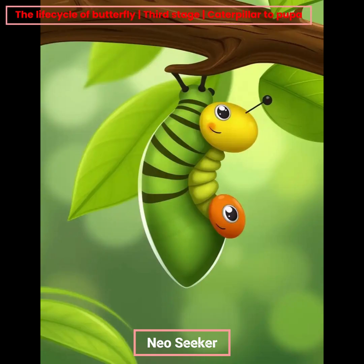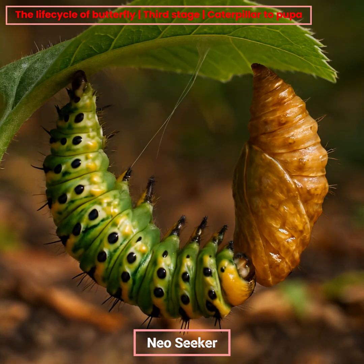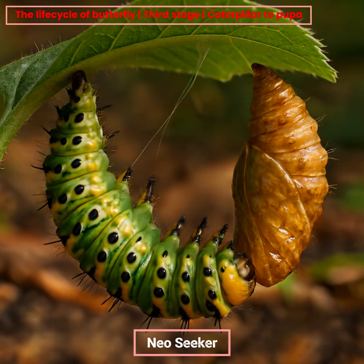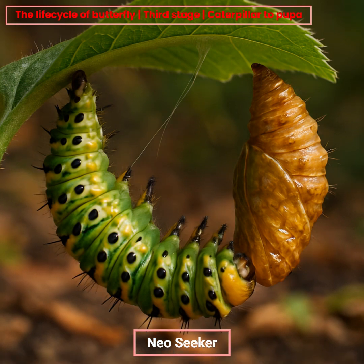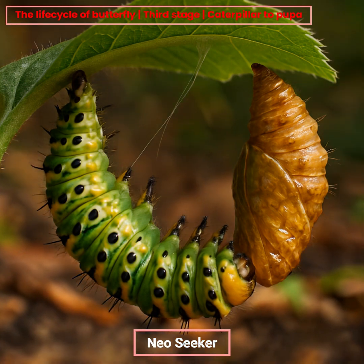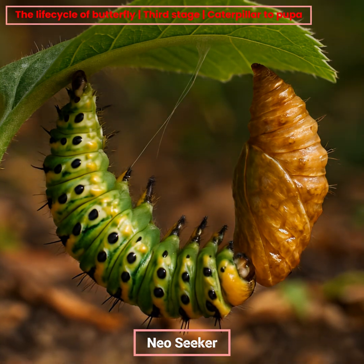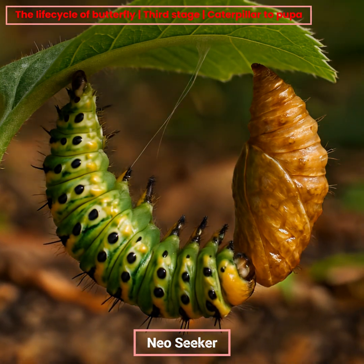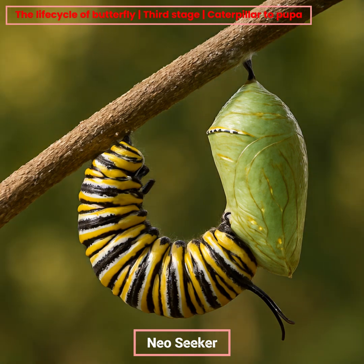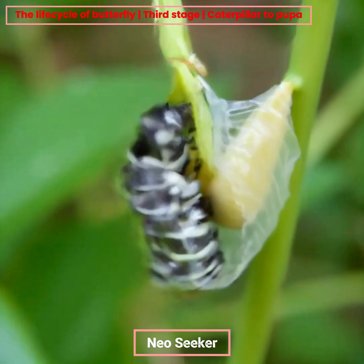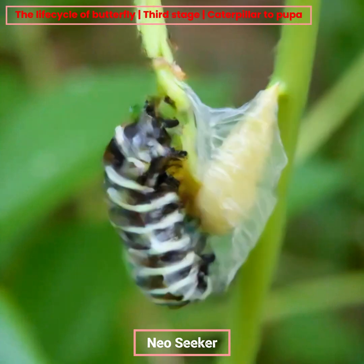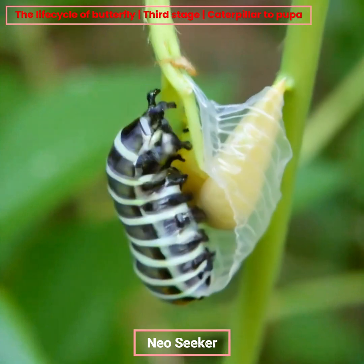Once fully grown, the caterpillar enters the third stage, forming a pupa or chrysalis. The caterpillar attaches itself to a surface, and its skin hardens into a protective casing. From the outside, this appears to be a resting stage, but inside, a miraculous transformation is occurring.